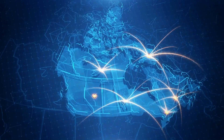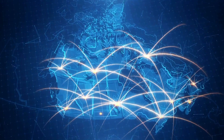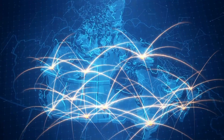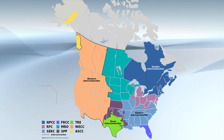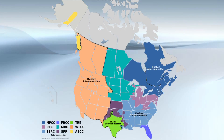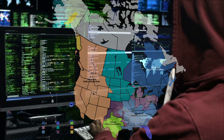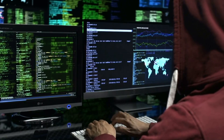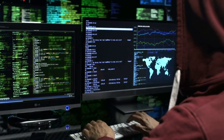They're working on unifying the grid right now in Canada, which is going to cost billions upon billions of dollars. In the United States, there are three main power grids: the Eastern, the Western, and the Texas power grid.